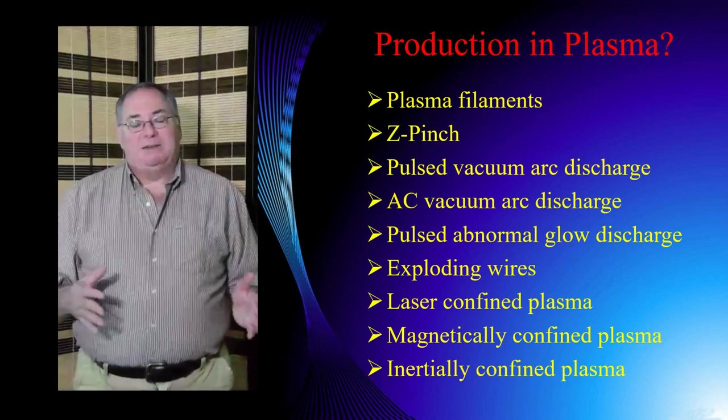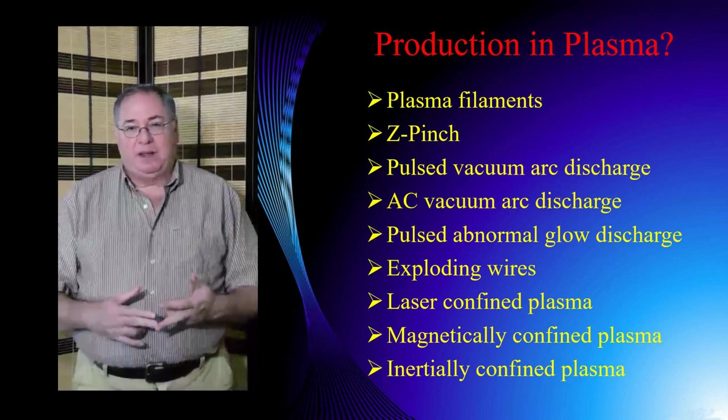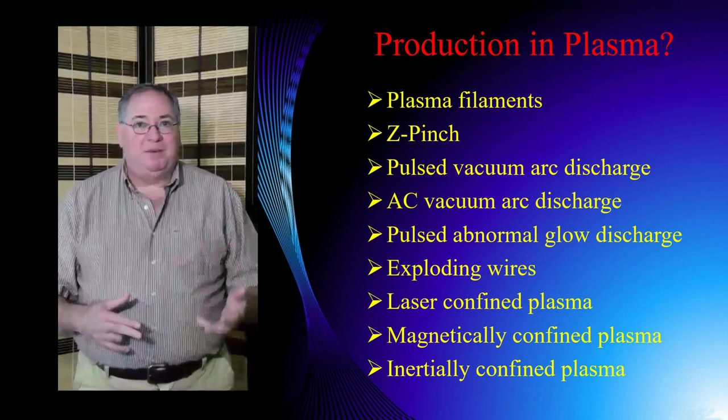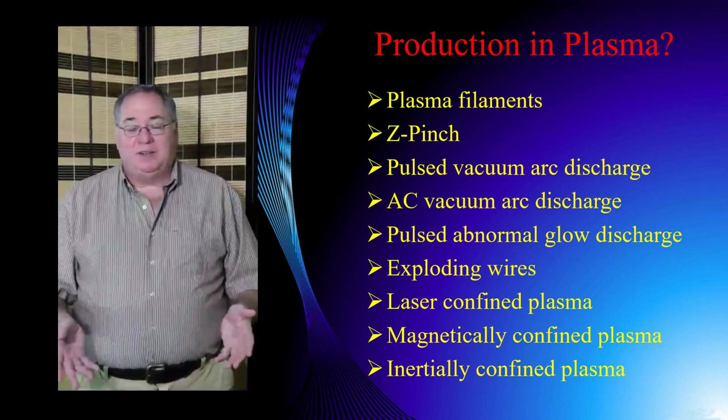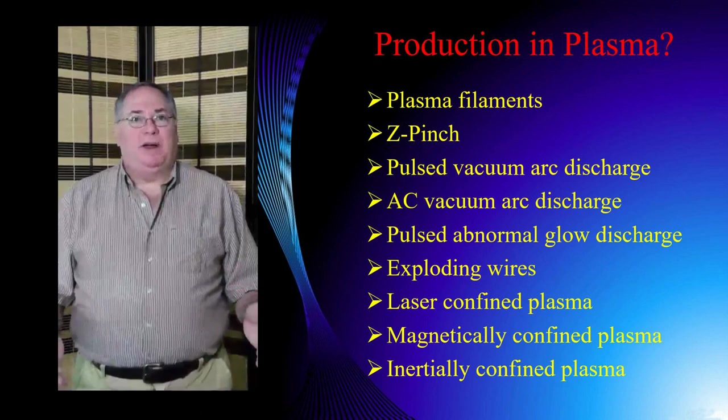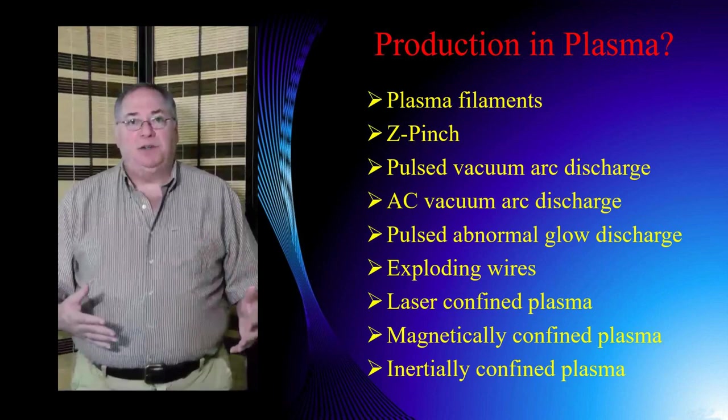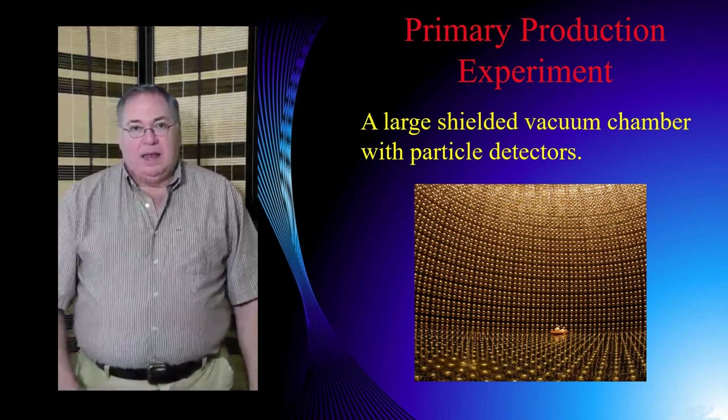So, it appears like the most likely place where we see electron-proton production is in plasma. So, we can consider plasma filaments, plasma pinch, pulsed vacuum arc discharge, AC vacuum arc discharge, pulsed abnormal glow discharge. I've heard of anomalous energy coming in exploding wire experiments. Someone who has laser or magnetically confined plasma experiment could try to do a proton-electron production experiment or inertially confined. So, there are a lot of experimental apparatuses that already exist that could be potentially adapted to trying to see if we can first produce protons and electrons, and secondly, to see if we can extract energy from it.